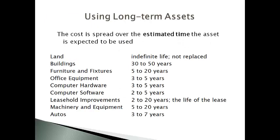Take a moment and review the useful lives of the items reported as property, plant, and equipment. Notice that the years are within a range. The useful life of a particular company for each type of asset is based on the accountant's judgment.